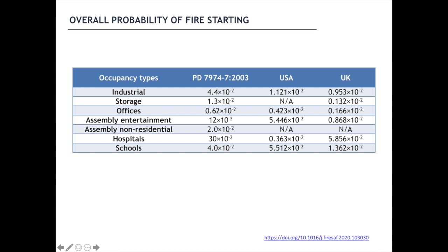Values from PD 79747 seem to overestimate contemporary fire statistics for the UK and US — in particular for industrial buildings, where they appear to be four times greater; assembly and entertainment, approximately two times greater; and hospitals, five times greater than the maximum value found in the other two statistics. PD 79747 only underestimates the probability in schools. Trends appear uniform, with PD 79747 generally overestimating the probability of fire starting, showing a reduction of fires in current statistics, probably due to improvements in fire safety measures in buildings.